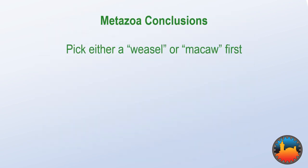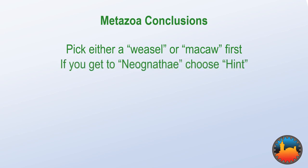So here's the takeaway. First, you should select weasel, mink, or one of the otters. If you want to reduce the maximum number of guesses, you should pick a bird. Second, if at any point the best node you have is neognathy, then hit the hint button — it'll save you time in the long run.